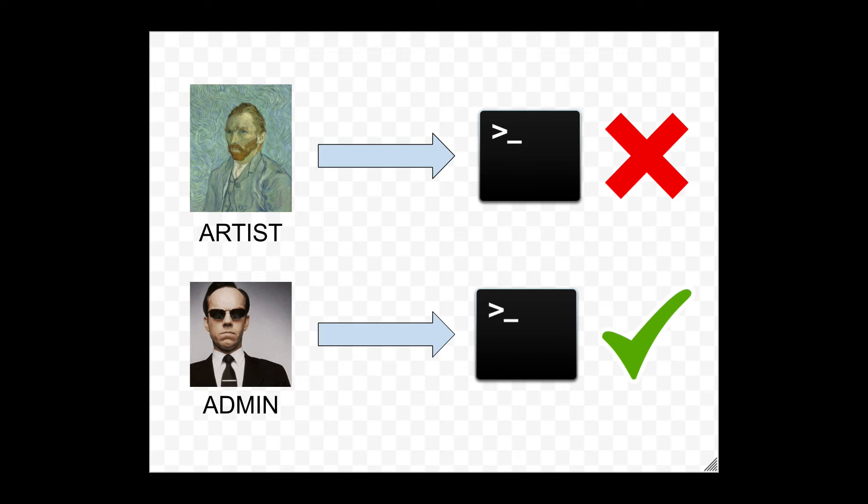Or what if you have an automated process that runs nightly on a cron, unassociated with any particular Shotgun user account? There are many valid use cases that prove relying on user permissions for automation is impractical or too restrictive. One horrible workaround hack, of course, is to loan out an admin user's credentials in those cases — I won't even start to talk about the security nightmares and practical issues with that. There is a better way to crack the nut: script keys.